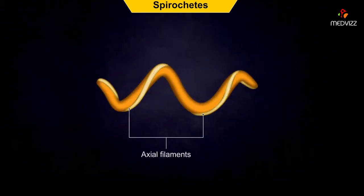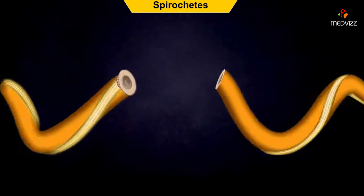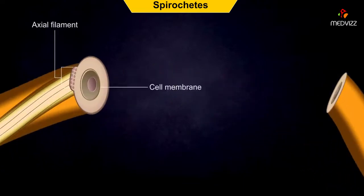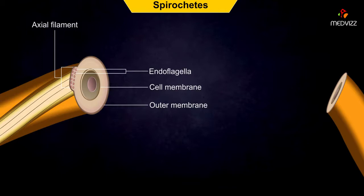Spirochetes have an axial filament that lies between the outer membrane and the cell membrane. The axial filament winds around the outer edge of the cell, and is made up of a bundle of modified flagella called endoflagella.